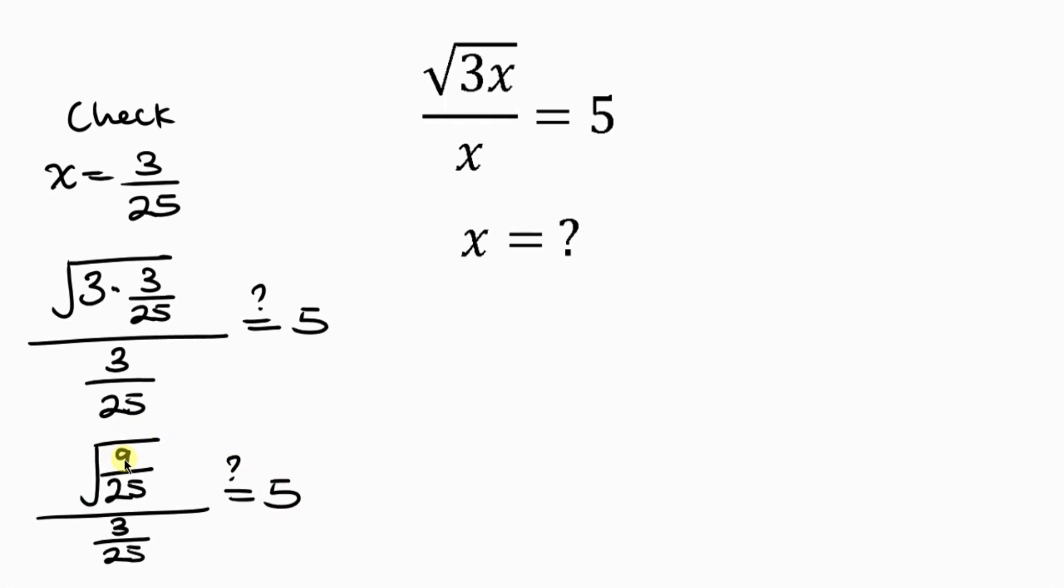This square root affects the numerator and the denominator. So, the square root of 9 is 3, all over the square root of 25 is 5, all over 3 over 25.